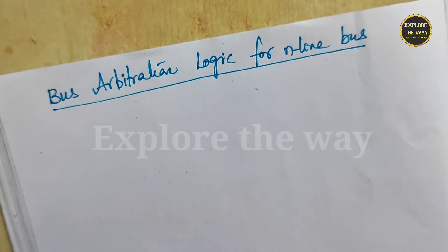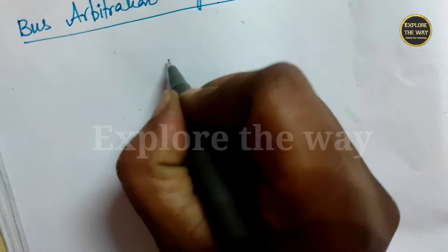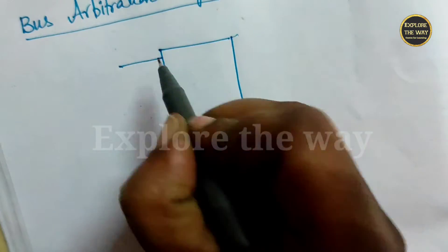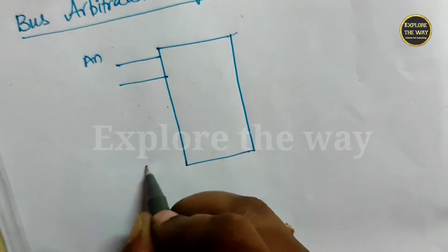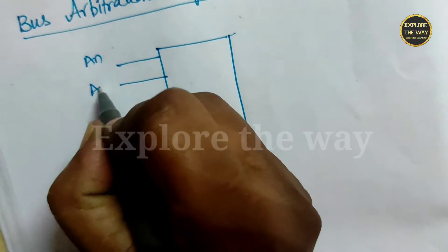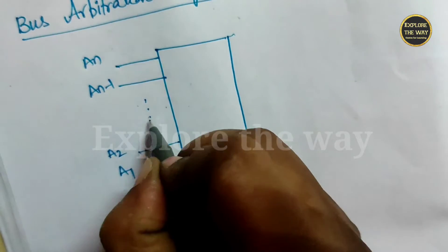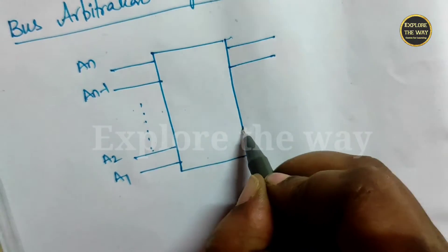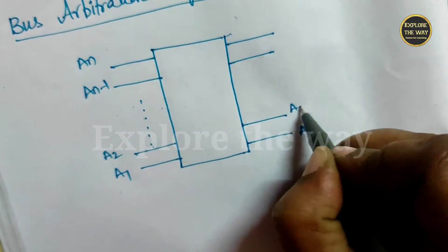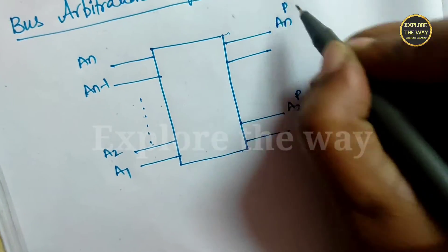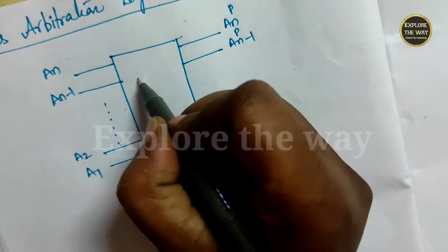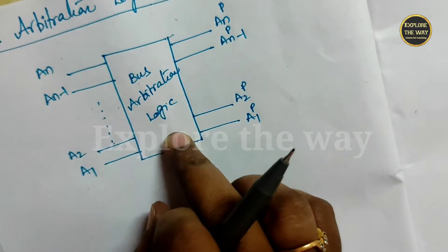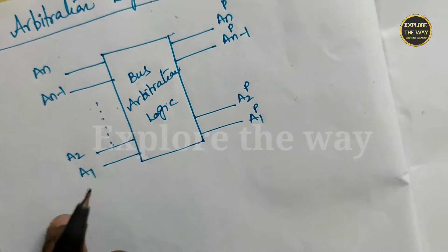This arbitration is based on priority of the inputs. There are n input devices requesting bus access. The n input devices are a1 to an, and the corresponding output lines are a1^p to an^p. These are the output lines. This block is the bus arbitration logic, which decides for which input device the access is to be given.